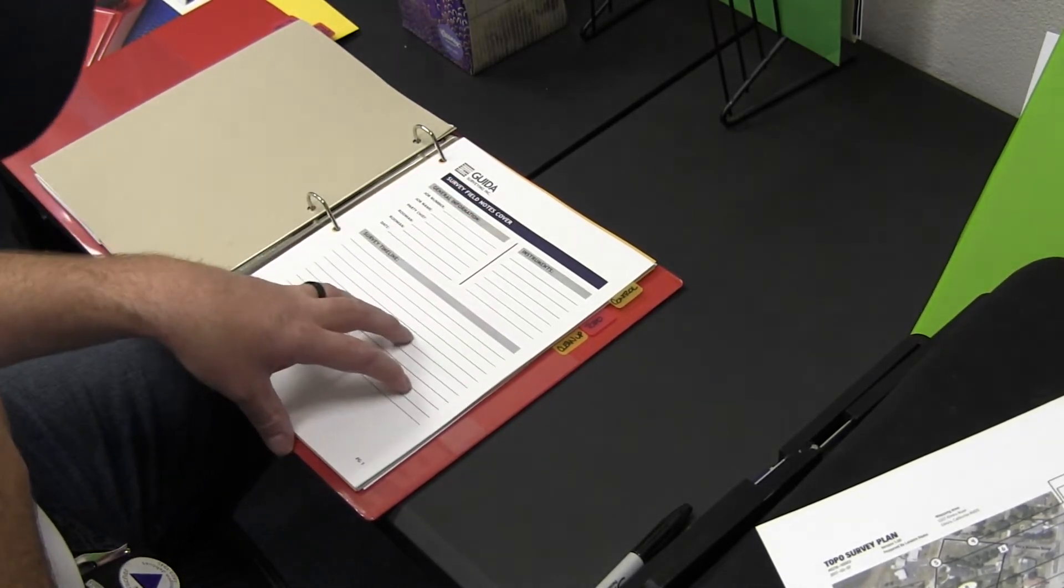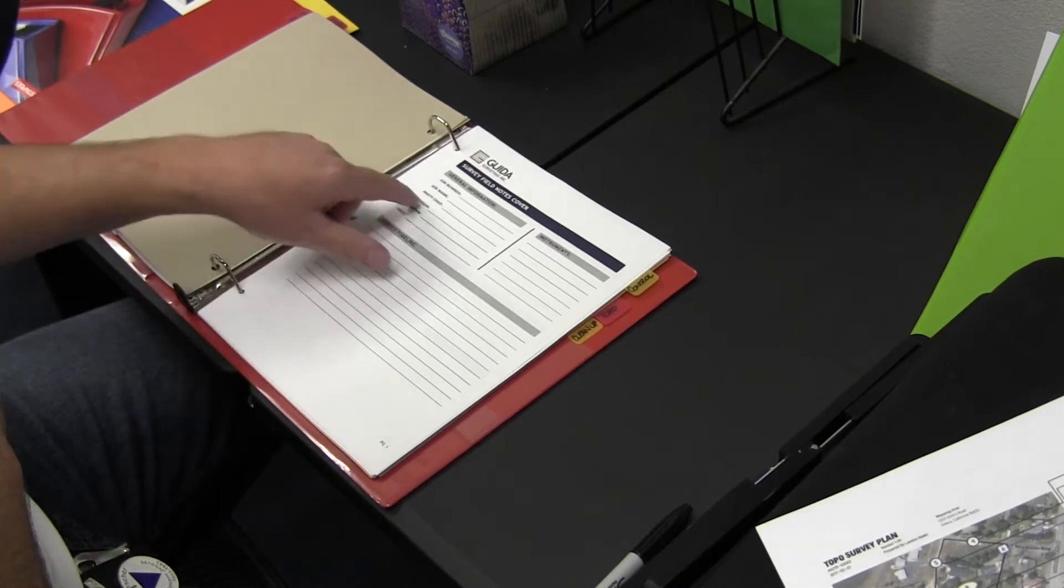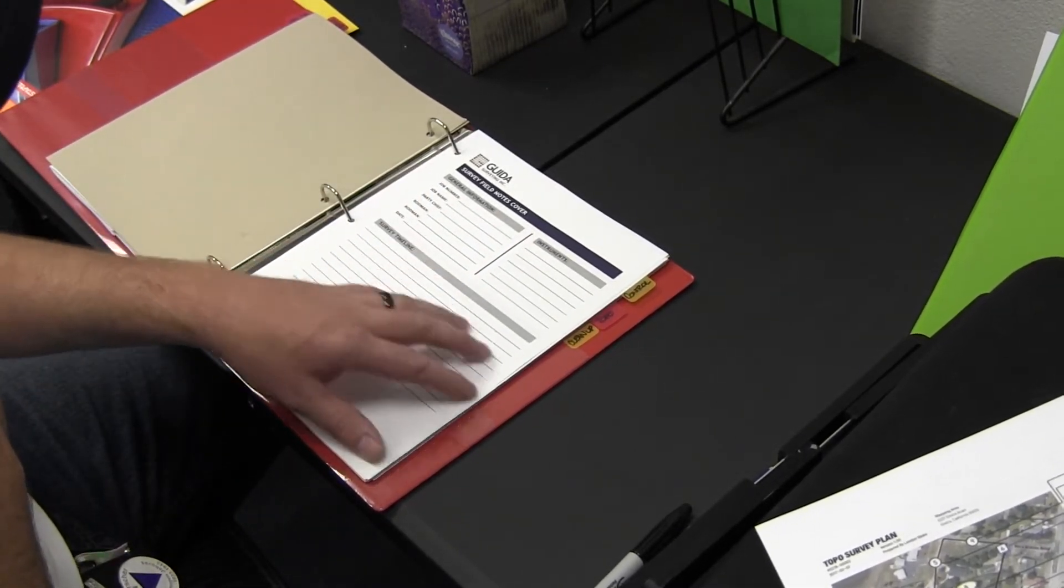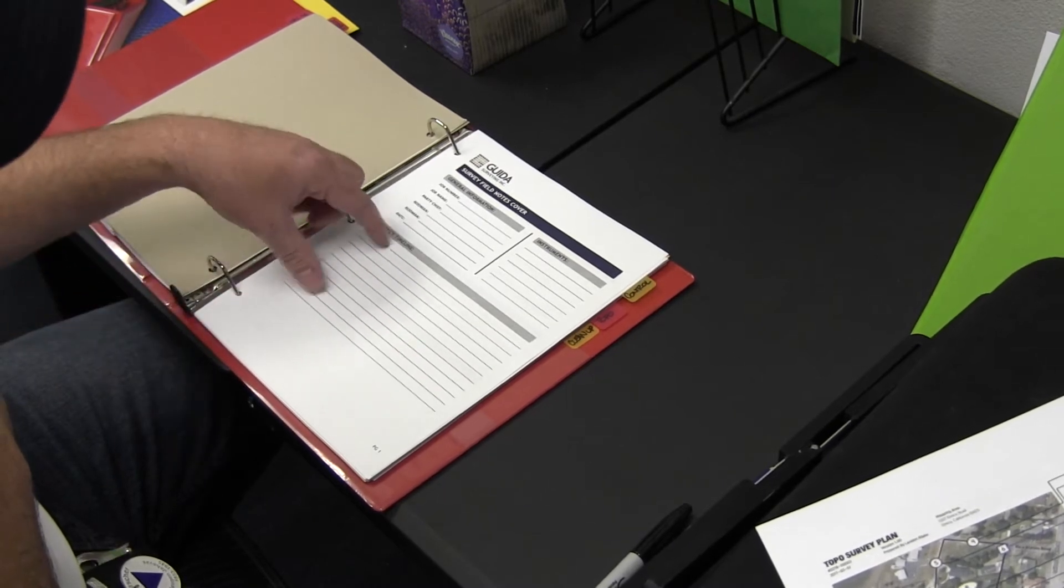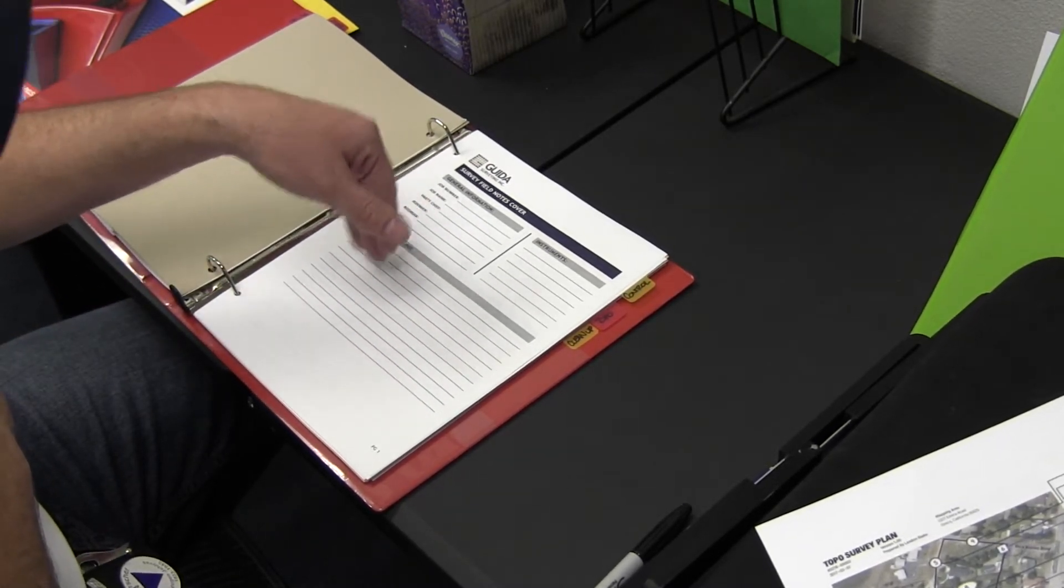It's just some general information that the crew fills out: job number, job name, who's the chief, who's the chain man, the date, the instruments that you're using. Then right here I have what's called a survey timeline. This is just a simple timeline that the crew gives me that walks me through what they did on the site. That helps me interpret the notes or look at their raw data.